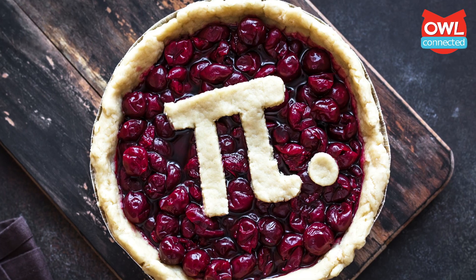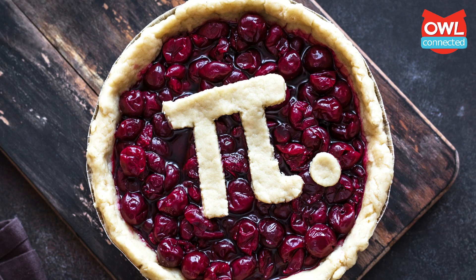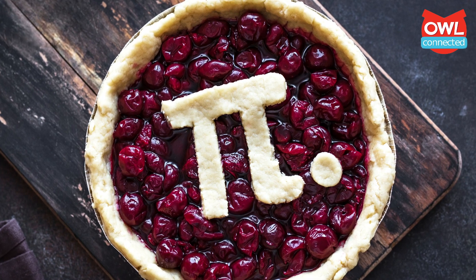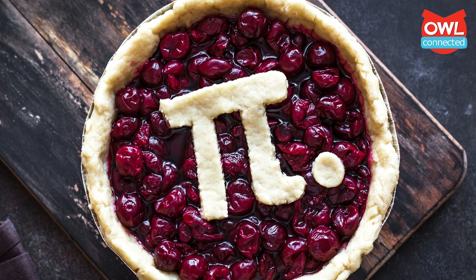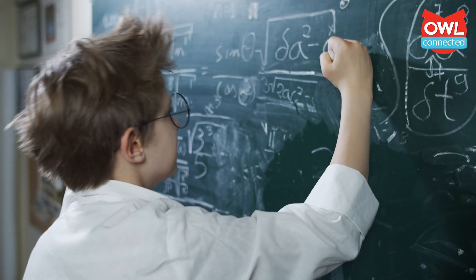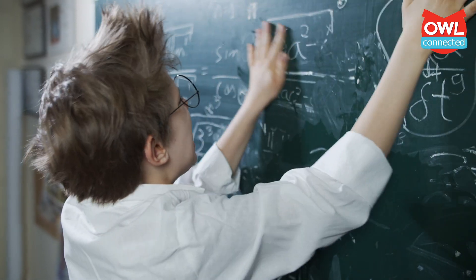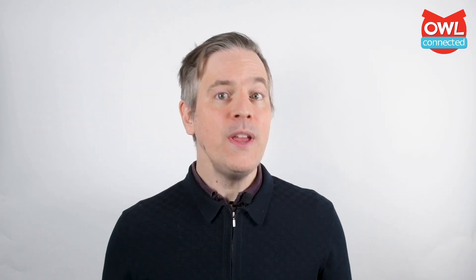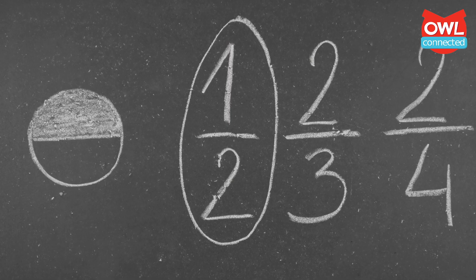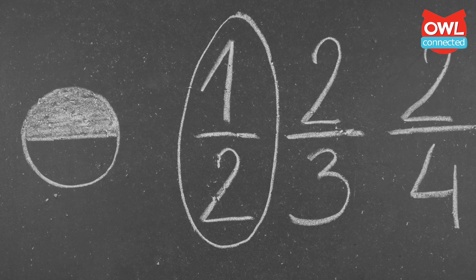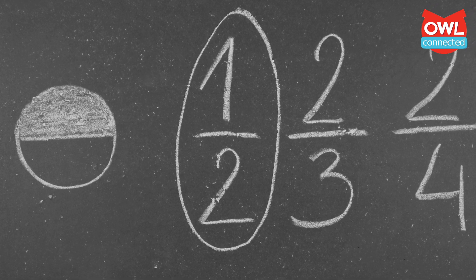Of course, this is where things begin to get a little complicated. That's because Pi is also what is known as an irrational number — a value that cannot be expressed as a simple fraction. We use fractions to express values that aren't an entire number. A classic fraction is 1 over 2, or one half.